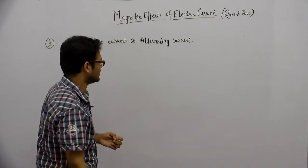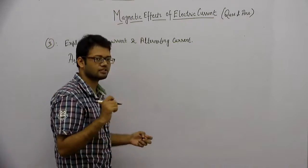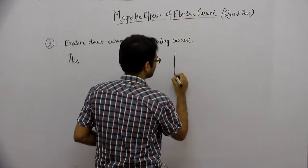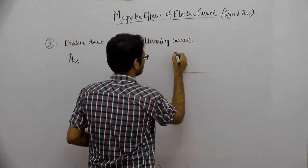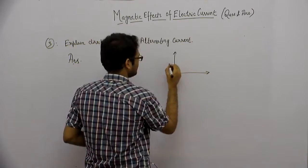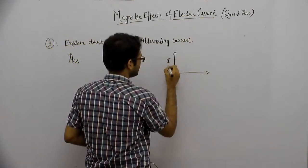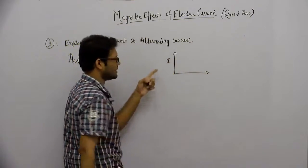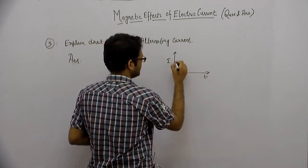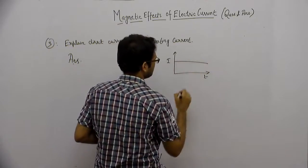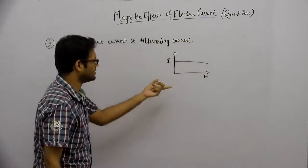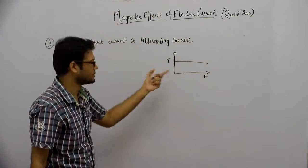अगर हम direction और time का graph बनाएं तो उसका graph कुछ ऐसा होगा — current है और यह time है, तो the graph will be a straight line parallel to the time axis.